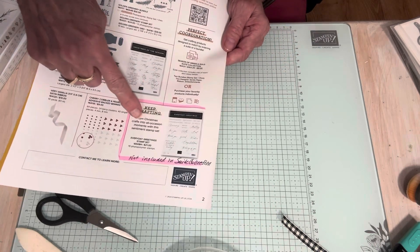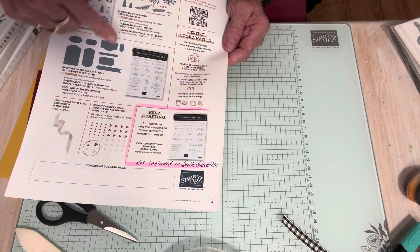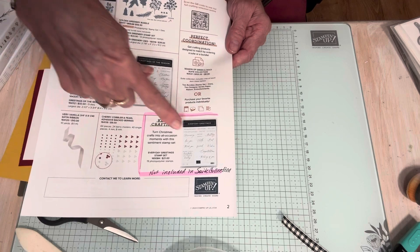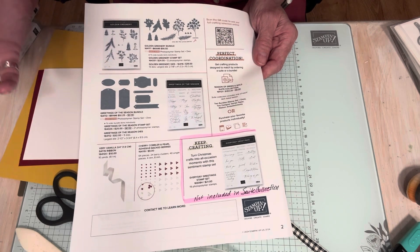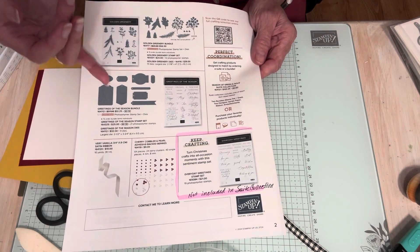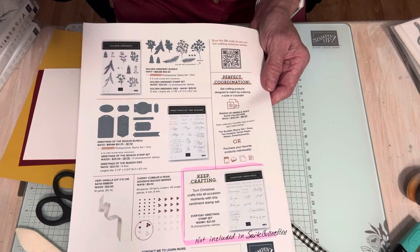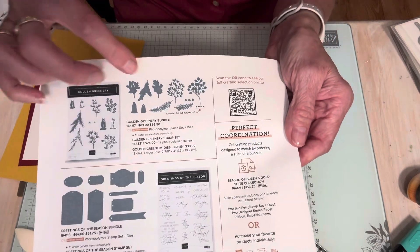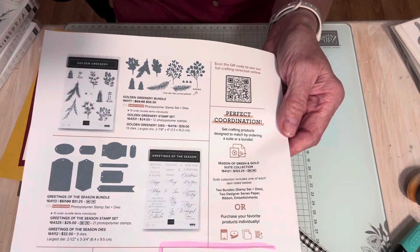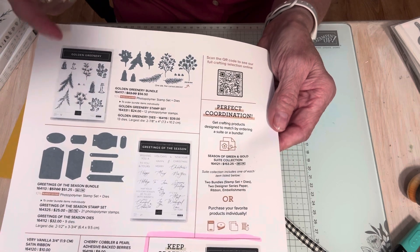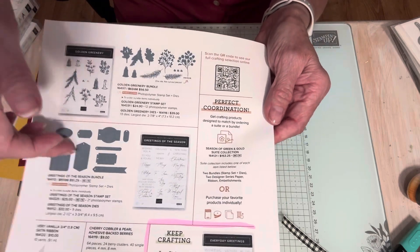This other stamp set, Everyday Greetings, is separate. I did purchase that separately because it's not Christmas. These are all Christmassy. So I purchased this separately because all of these sentiments fit inside these dies. So these dies I call standalone. You don't have to have the stamp set. They're still remarkable. These, on the other hand, without the stamp set, a lot of these would just kind of be blobs. So from that standpoint, I would say you need the bundle. On this one, you don't have to have the bundle. You could just have the dies or the stamp set.